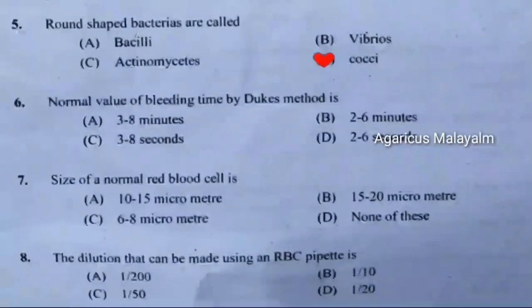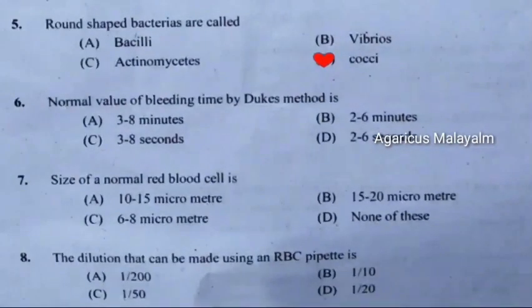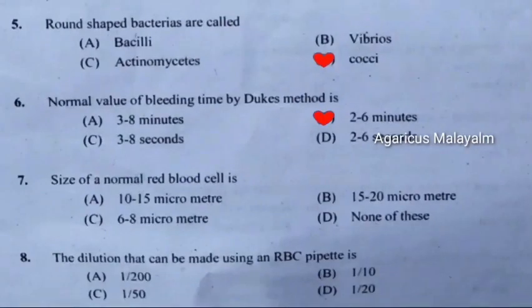Sixth question: Normal value of bleeding time by Duke's method is. Correct answer is Option B: Two to six minutes.